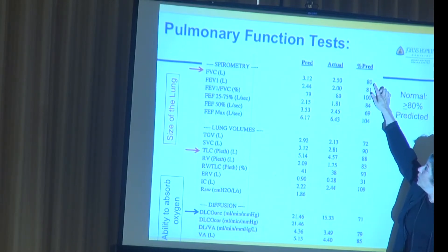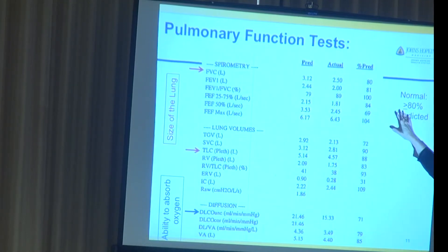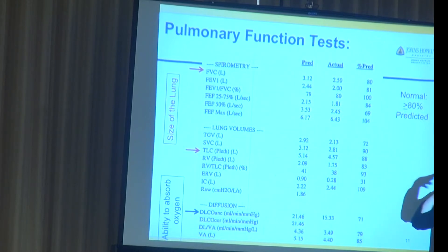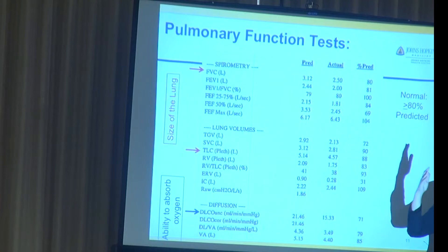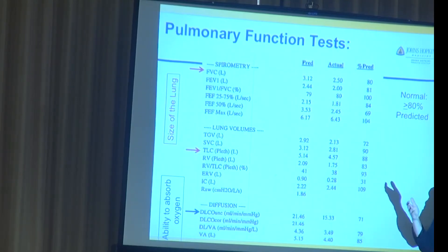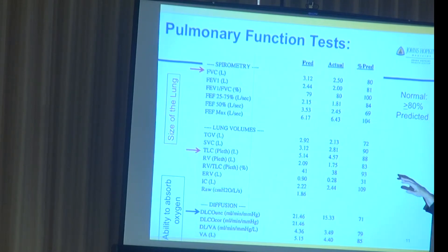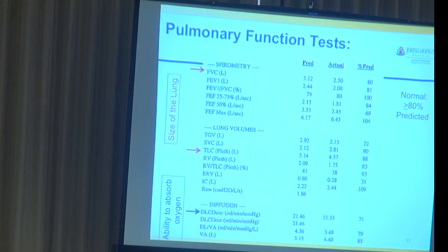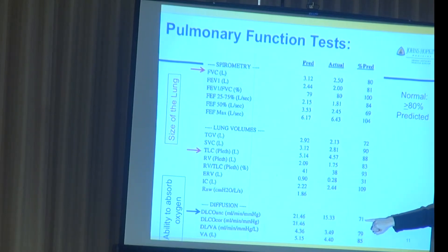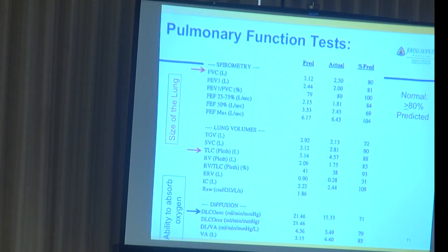For example, if this person's forced vital capacity is 80%, it's in the normal range — there's human variation, so anything 80% and above is normal. Their total lung capacity at 88% is definitely normal. But looking at the diffusion capacity — the DLCO — at only 71%, we would say this person has a mild diffusion defect, because that DLCO number is less than 80% of what would be predicted for somebody their age and height.